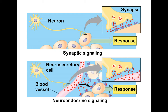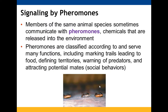Animal species often communicate with pheromones — chemicals released throughout the environment. These are able to mark trails (such as how ants keep returning to food), identify territories, serve as warnings, and attract mates.